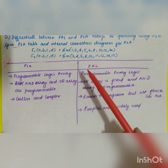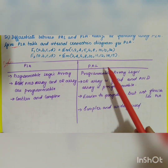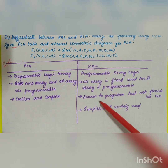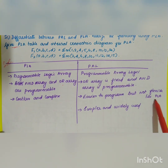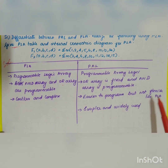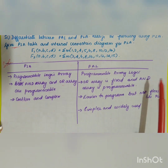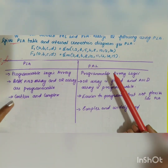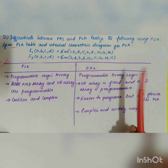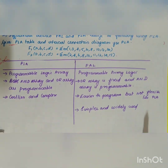PLA is costlier and complex, whereas PAL is easier to program but not flexible like PLA. PAL is simpler, widely used, and cheaper. These are the main differences between PLA and PAL. Now let us solve the problem.